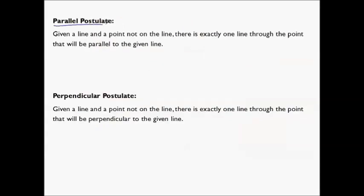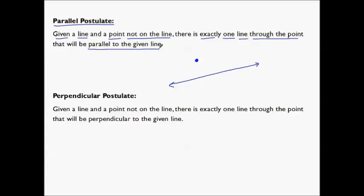The parallel postulate. Given a line — so in a picture I'm going to draw a line — and a point not on the line, so anywhere not on the line is fine, there must be exactly one line through that point that will be parallel to the given line.